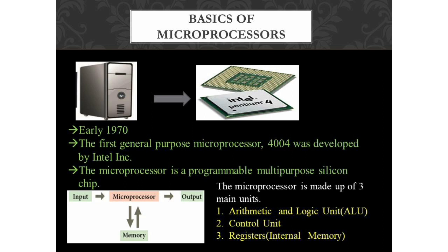The microprocessor is more than the CPU. It contains other processors like graphics processing units, sound cards, and network cards encased within it. So the CPU is a part of the microprocessor, but the microprocessor is more than just the CPU. Microprocessors were first introduced in the early 1970s, and the first general-purpose microprocessor, the Intel 4004, was developed by Intel Inc.